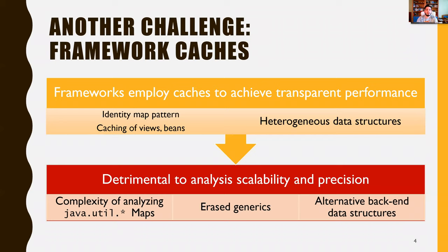Another challenge we discovered through the course of this work is the use of CASI's central data structures, used primarily for caching bins, views, or database objects. These CASI structures rely on the use of Java Util Maps. As it turns out, maps are an incredible challenge for even the most precise analysis. The analysis fails to model the flow of values through maps, gets confused, loses precision, and thus scalability.